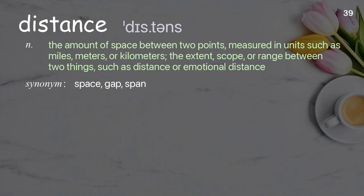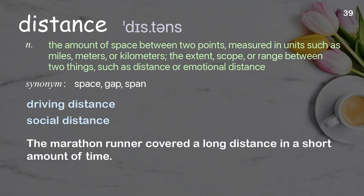Distance: The amount of space between two points, measured in units such as miles, meters, or kilometers; the extent, scope, or range between two things, such as physical or emotional distance. Examples: driving distance, social distance. The marathon runner covered a long distance in a short amount of time.